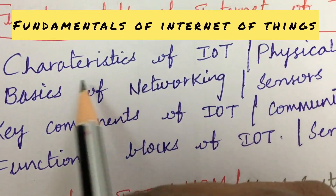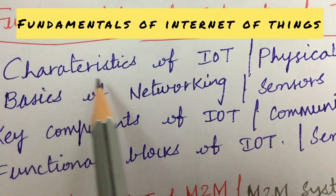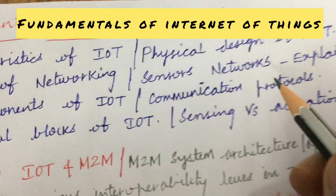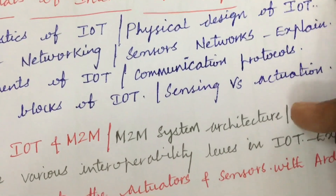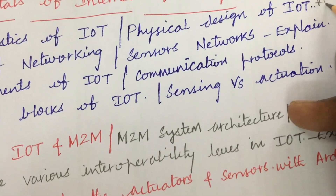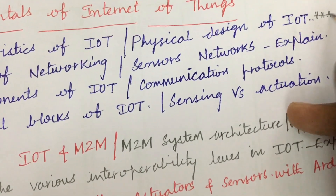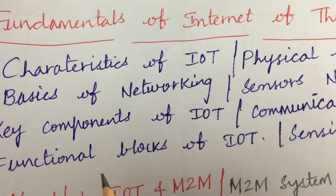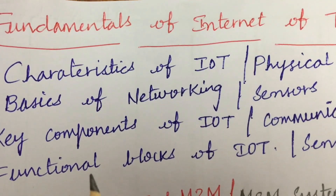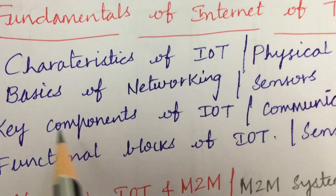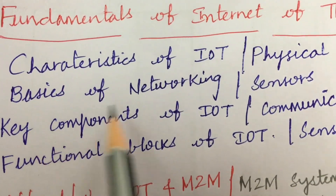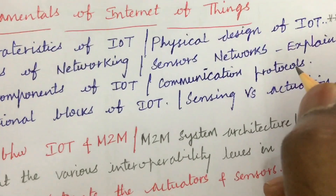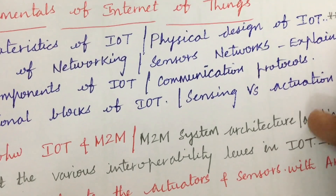The first and foremost gunshot question is the characteristics of IoT or the physical design of IoT. The course is short in its structure and may be covering all the questions on the paper. Also, the basics of networking as well as sensor networks are important topics to explain.